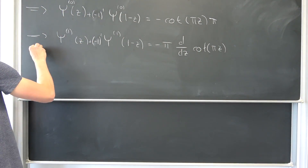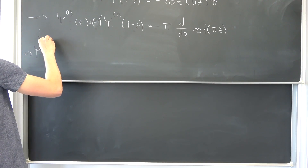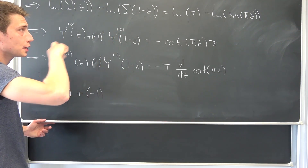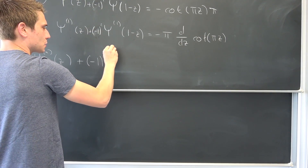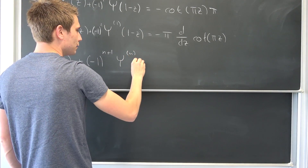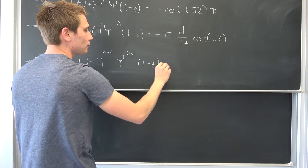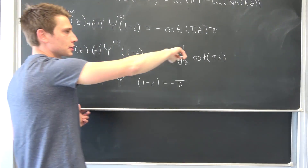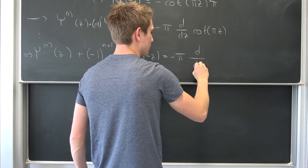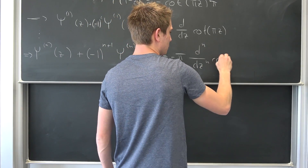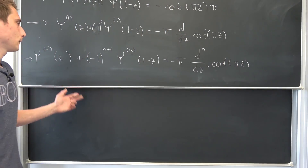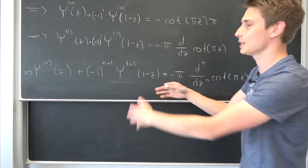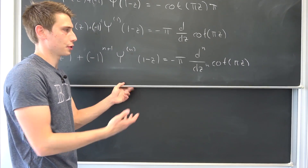Overall, if we take nth derivatives, we get the nth polygamma function of z, plus negative one to the n plus one power times the nth polygamma function of 1 minus z, being equal to negative pi times the nth derivative of the cotangent of pi times z. Feel free to multiply both sides by negative one to the n plus one power. This is our reflection formula for the nth polygamma function.